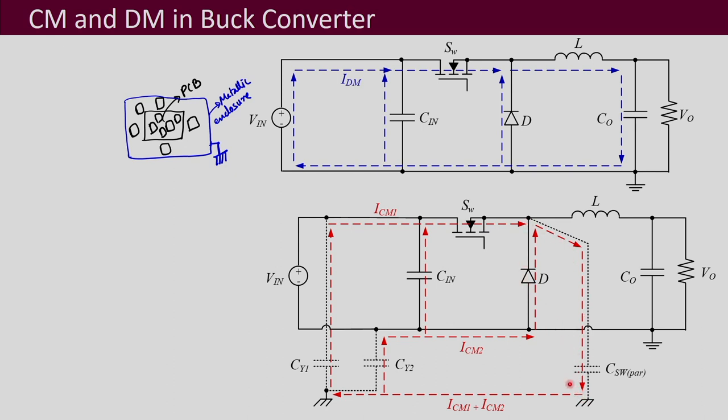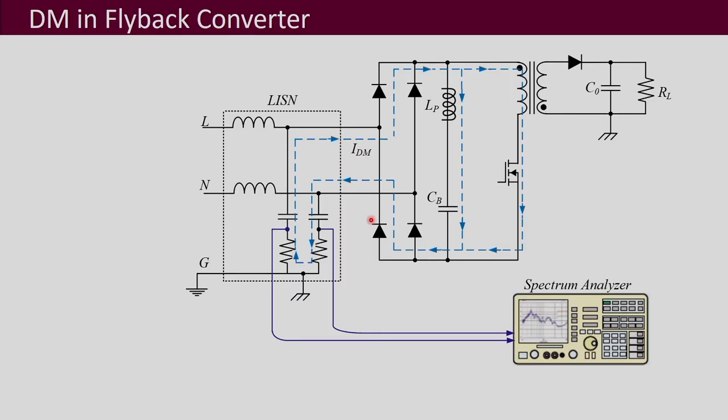So what happens is that currents flow through the switch to the heat sinks and then return to the ground. Similarly, small currents flow through the capacitors and through the diode, and they also combine and come back through the ground. These types of capacitors unintentionally formed between any point and the ground are the main source of common mode noise — they lead to small common mode currents. Because of these currents, you will have the common mode voltage as well. Let us see this in another converter also.